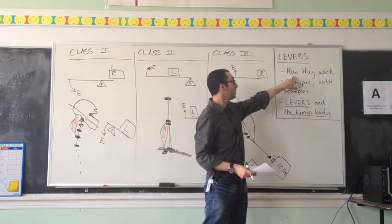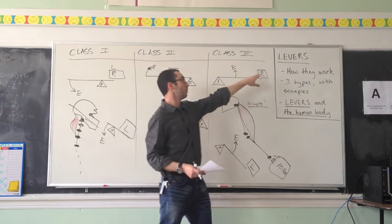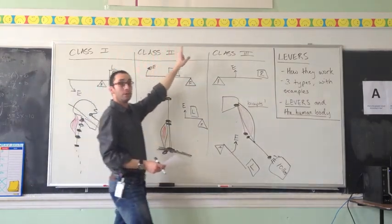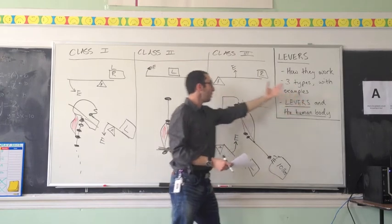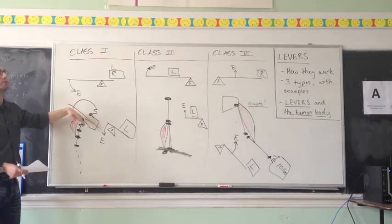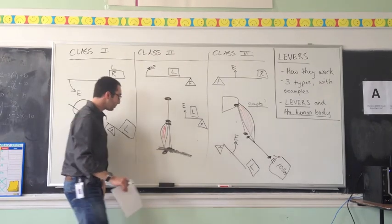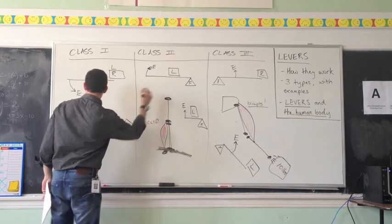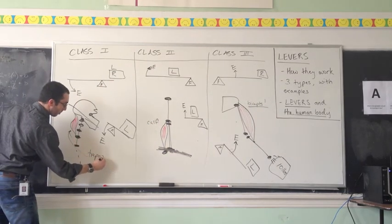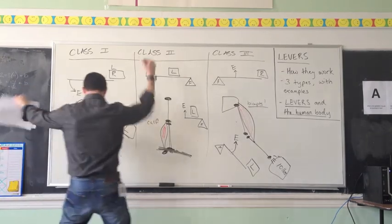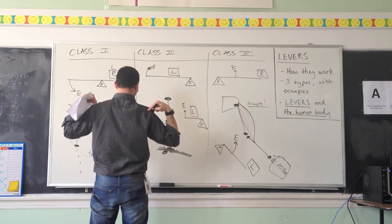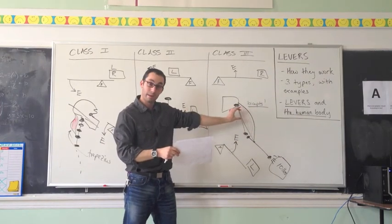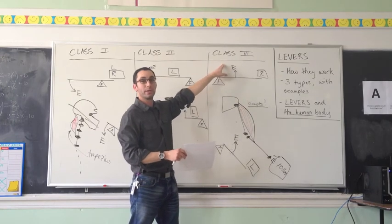So, to recap: levers are a beam with a fulcrum that helps you move a resistance or load with an effort that you apply. We've talked about three types — class one, class two, and class three — with an example of each. Class one: the soda can top, and your skull moving up and down. Class two: the wheelbarrow, and the calf muscle. Class three: the earth mover, and the biceps. The biceps tightens and fattens up when you bring your arm up. Any questions? Thank you very much.